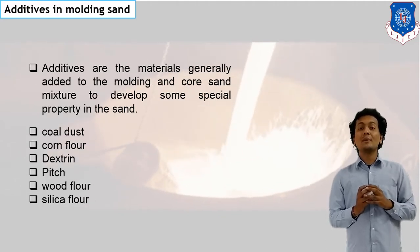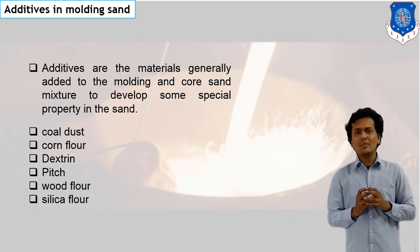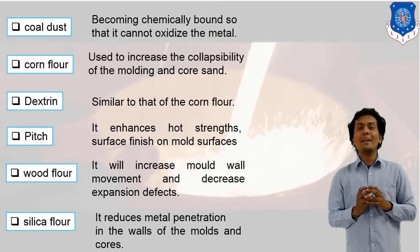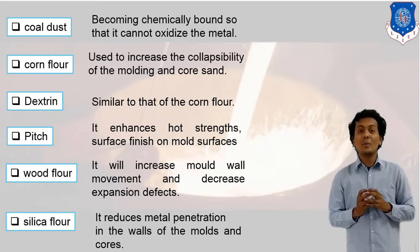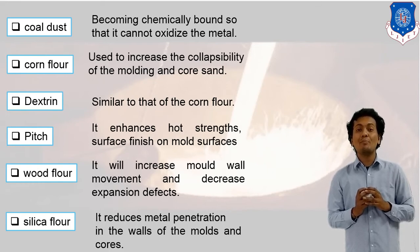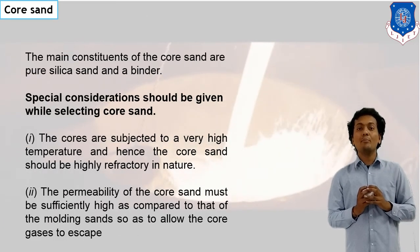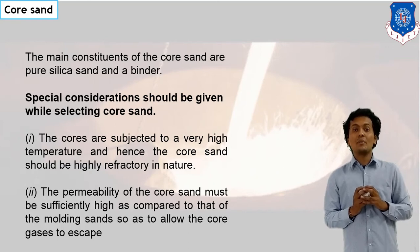Next, various additives can be used in molding sand to improve its properties. Here I have mentioned various additives like coal dust, corn flour, dextrin, pitch, etc. These types of additives are used for improving the properties of molding sand.